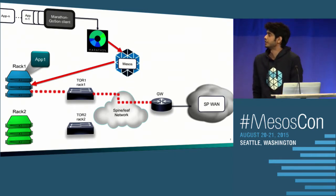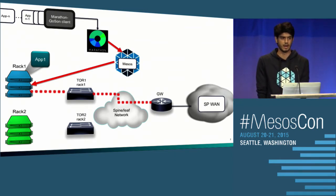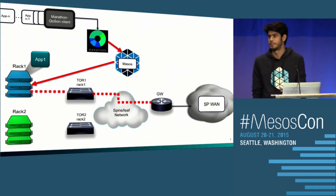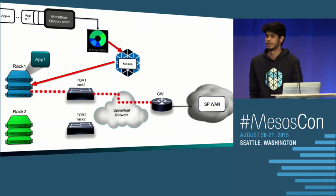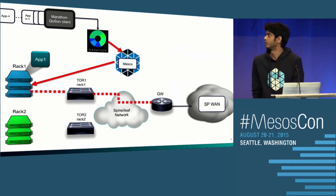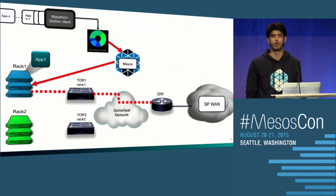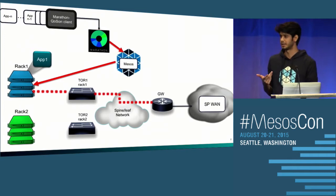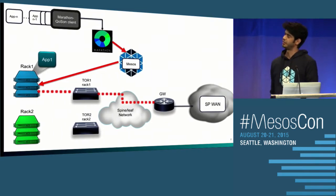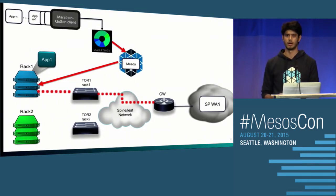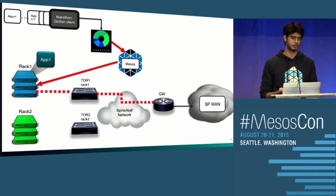Some of the new network devices that we are bringing out are basically just based on base Linux, and they're able to run containers, Docker, LXEs, et cetera, so that you can potentially host whatever applications you need. One of the applications we wanted to look at was trying to run something like a MesoSlave and see if we can hook it back into a data center and see if it becomes useful.